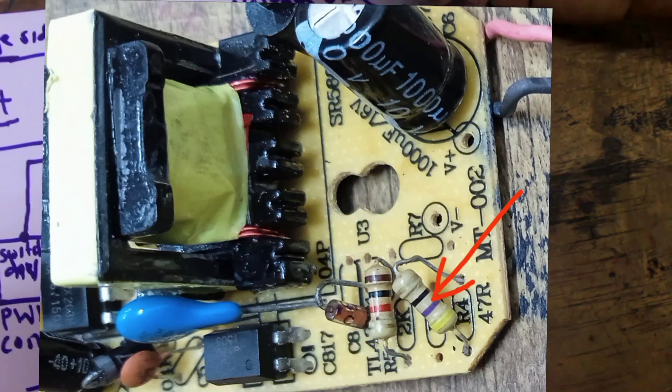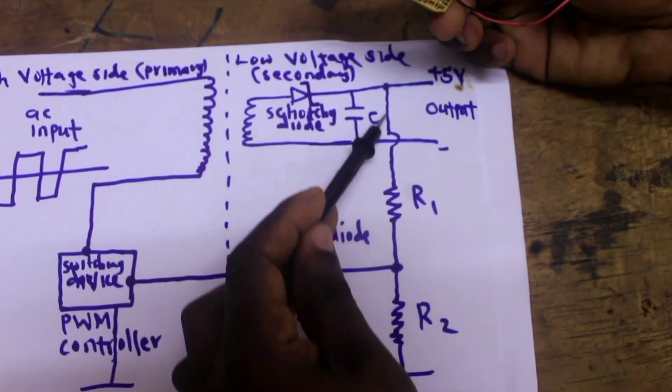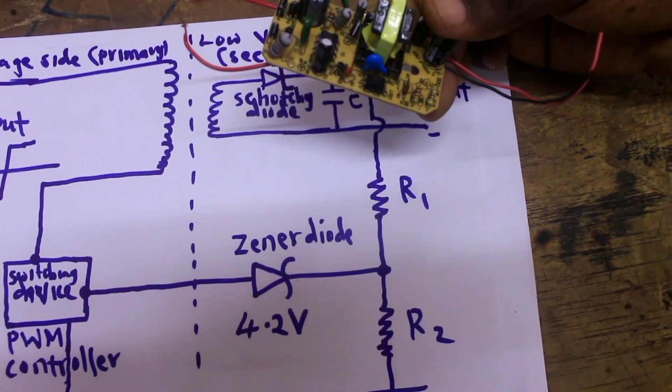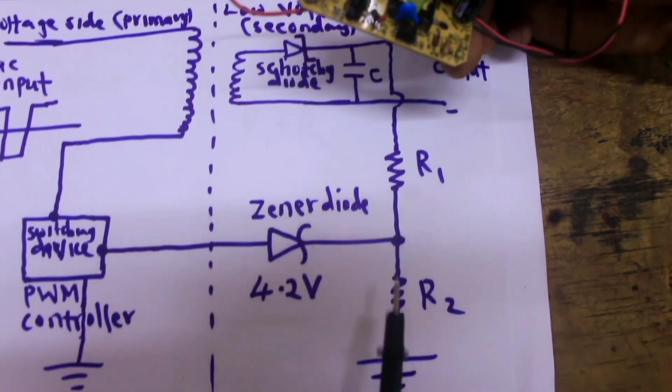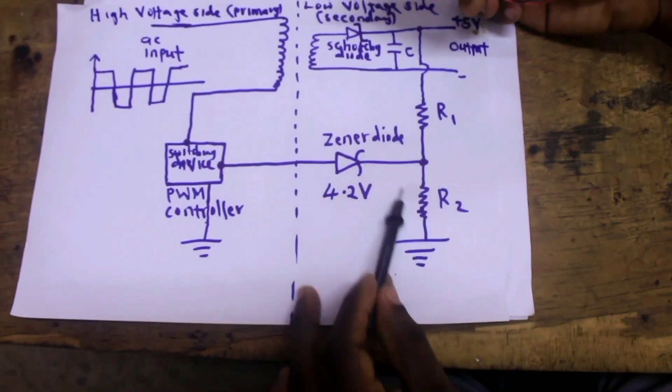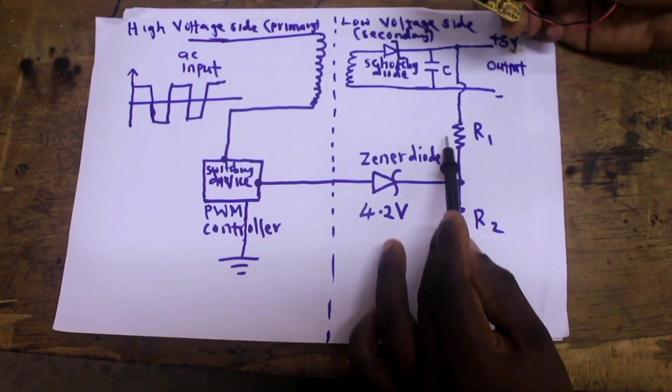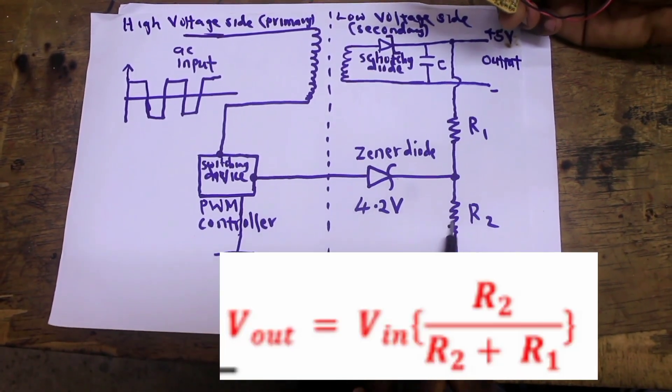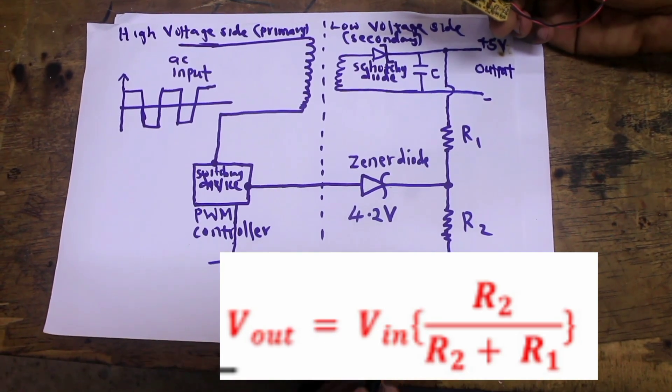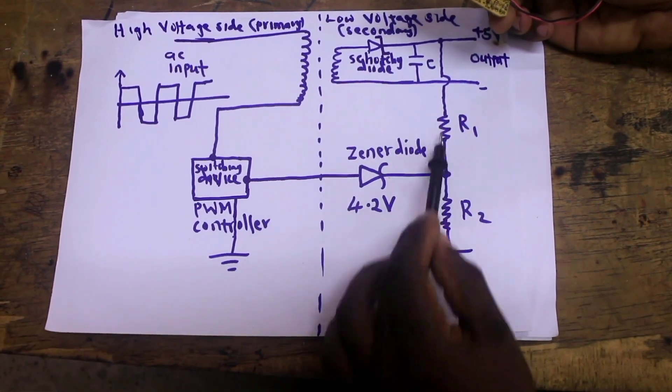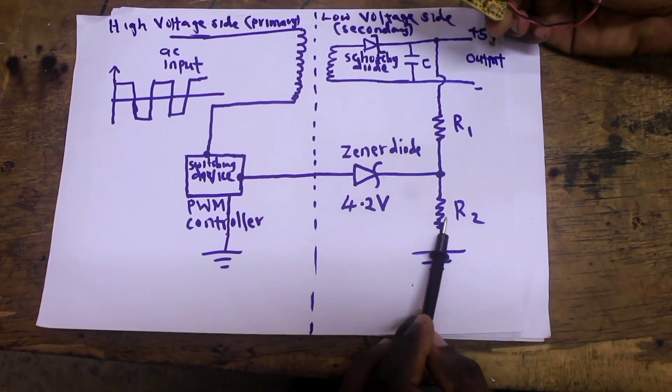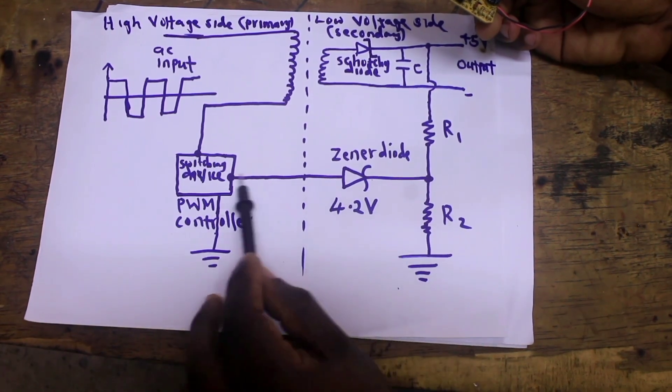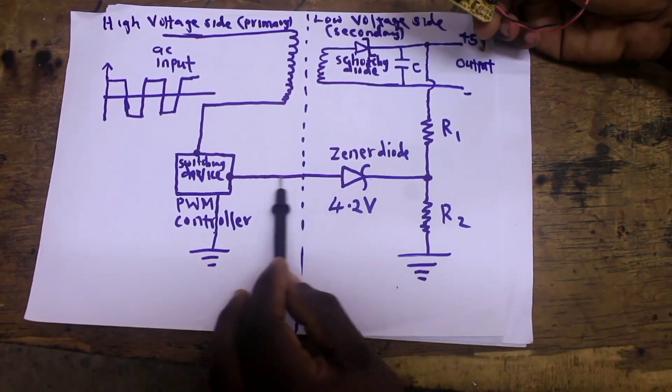This resistor is connected to the positive terminal of the output here and there's this other resistor which is connected to the ground forming a voltage divider. This voltage divider is used to scale this output 5 volts to a certain voltage which is lower than the output. The resistors will be chosen in such a way that they are reducing the voltage to 4.2 volts which is necessary for the Zener diode to conduct.